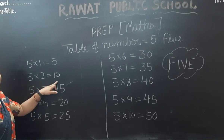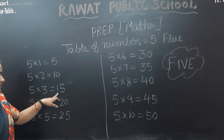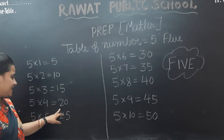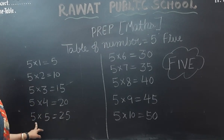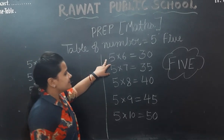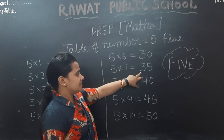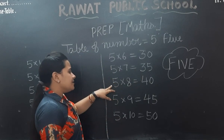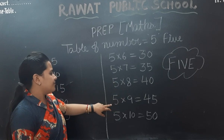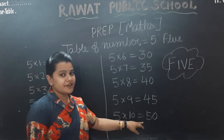5 times 2 is 10. 5 times 3 is 15. 5 times 4 is 20. 5 times 5 is 25. 5 times 6 is 30. 5 times 7 is 35. 5 times 8 is 40. 5 times 9 is 45. 5 times 10 is 50.